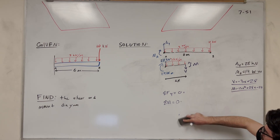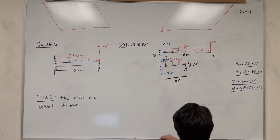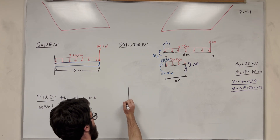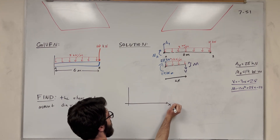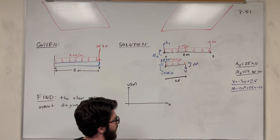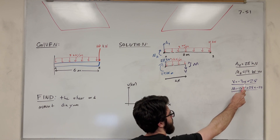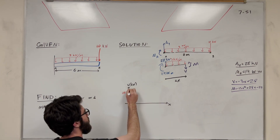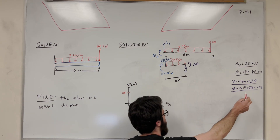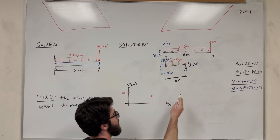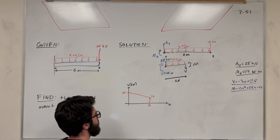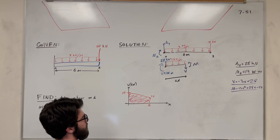So we found our two equations. Now it's just down to graphing them. Let's start with the shear diagram. Our shear equation is negative 3x plus 28, so we start at 28 kilonewtons. Then we go down with a slope of 3 as we move toward 6 meters. Plugging in x equals 6 gives negative 18 plus 28, which is 10. That makes sense because the 10 kN load pushes us down at that point. So it's just a straight line — that's the shear diagram.